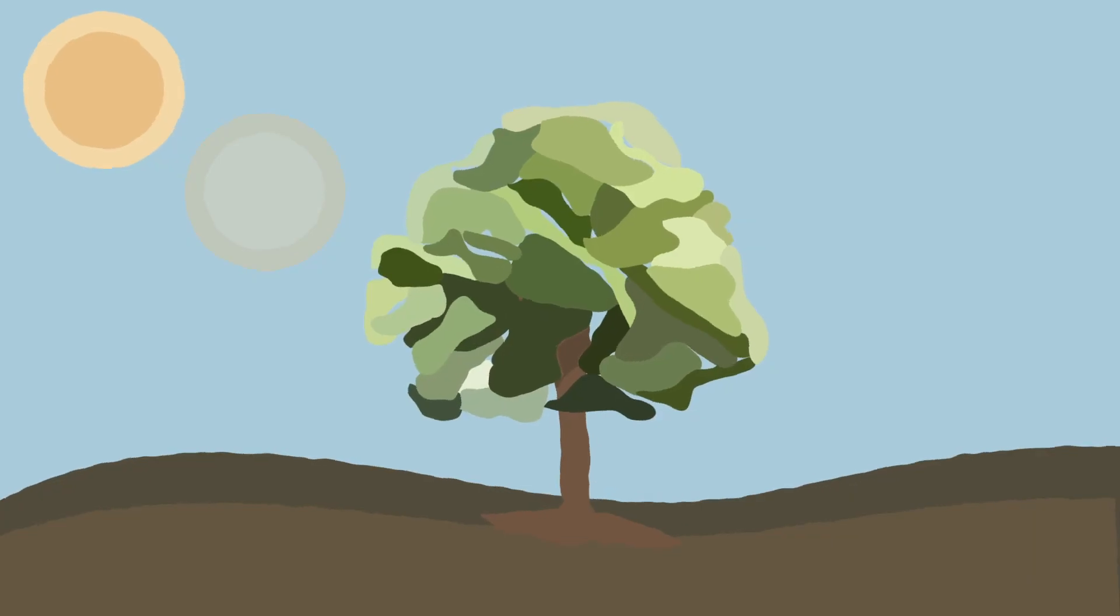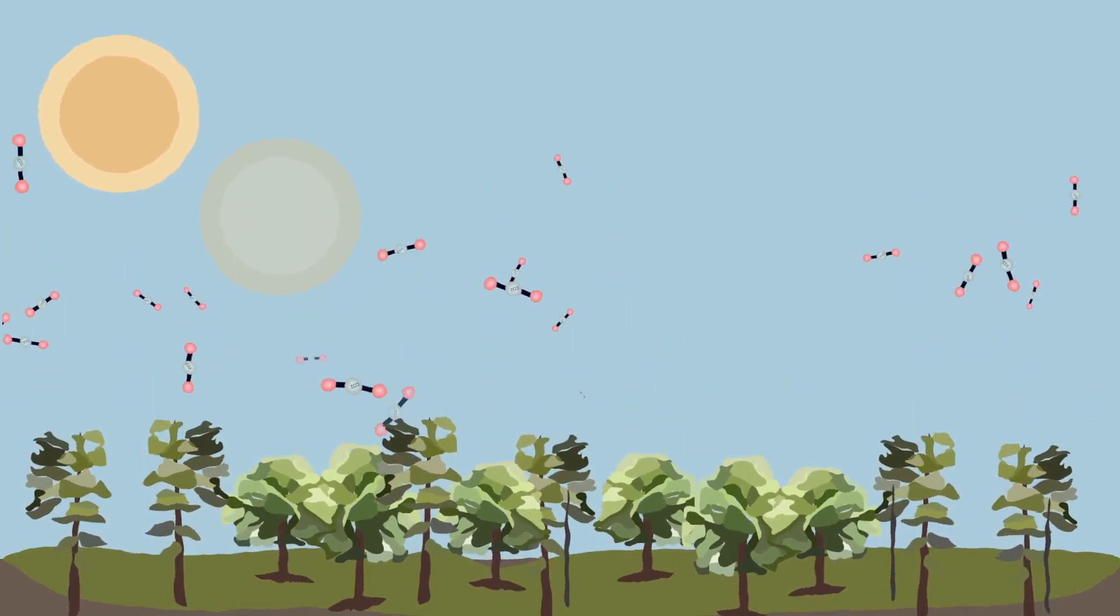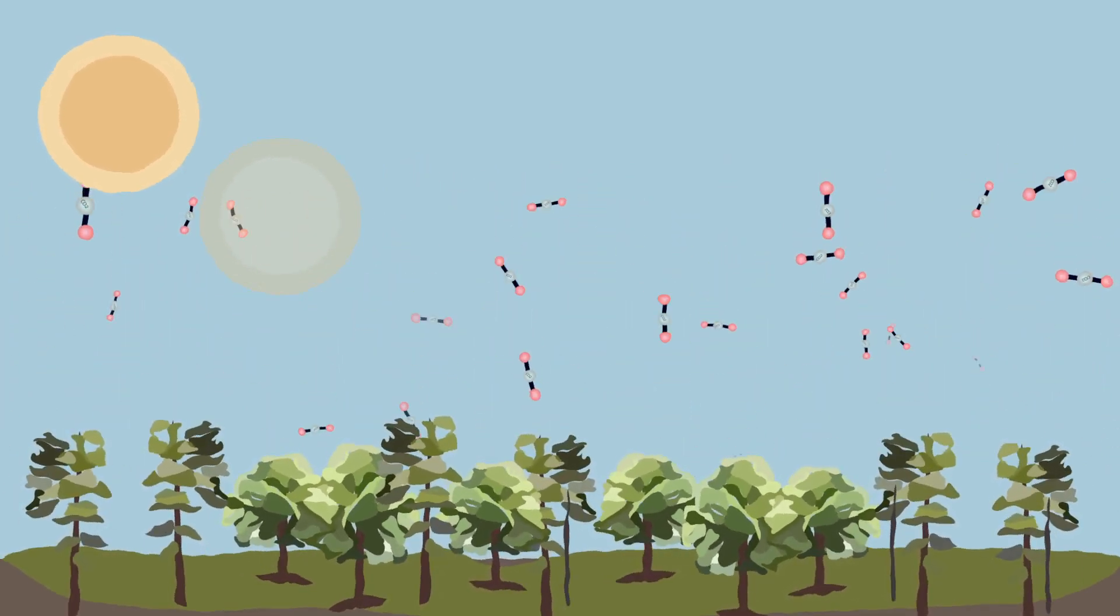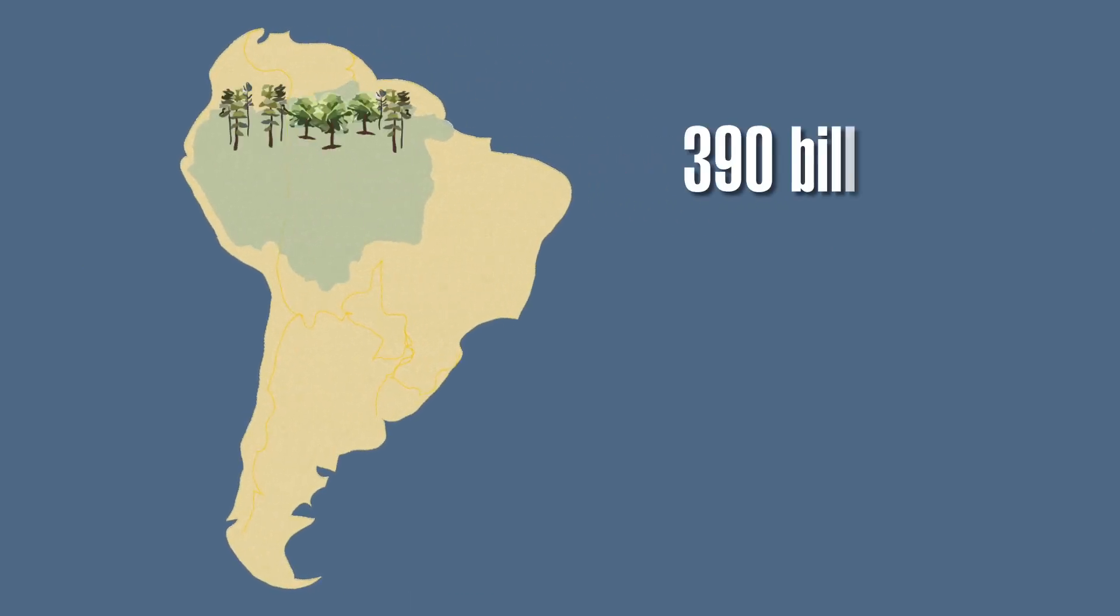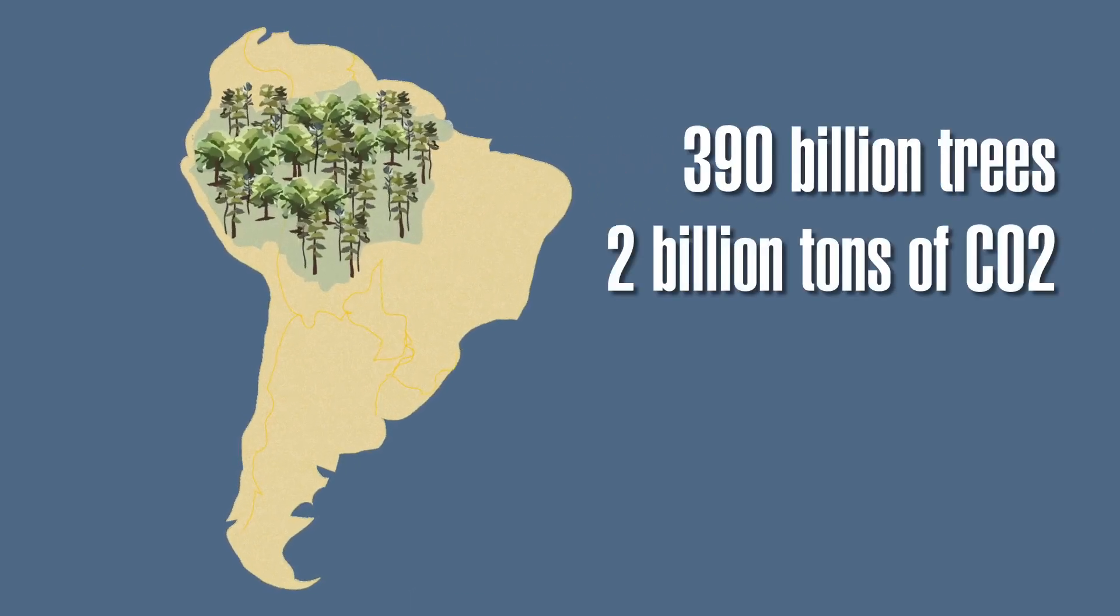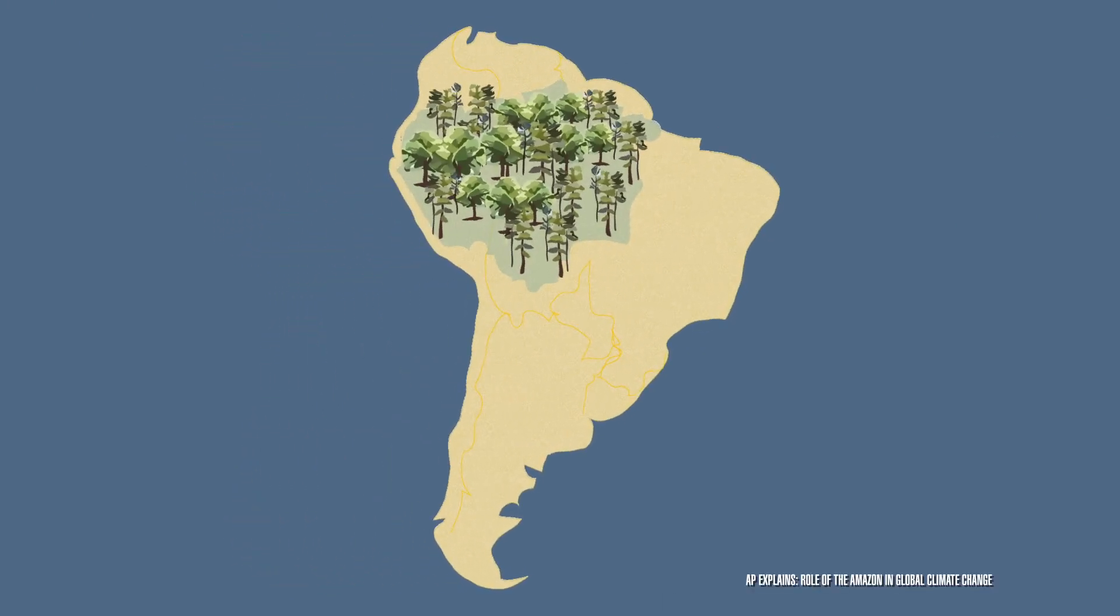Forests then absorb that carbon dioxide from the atmosphere through photosynthesis. Forested areas of the Earth act as a sink, draining heat-trapping carbon dioxide from the atmosphere. To give you an example, the Amazon rainforest has an estimated 390 billion trees and absorbs 2 billion tons of CO2 every year, making it a vital part of preventing climate change.